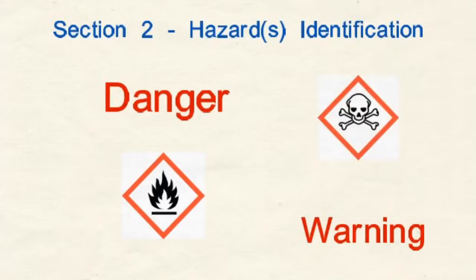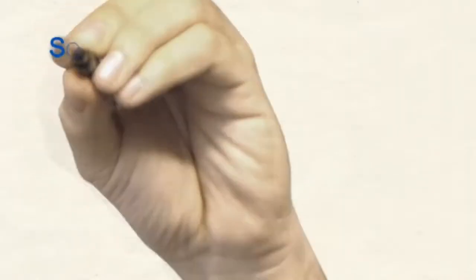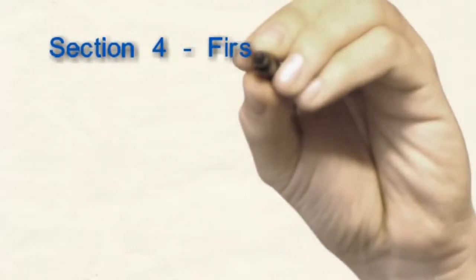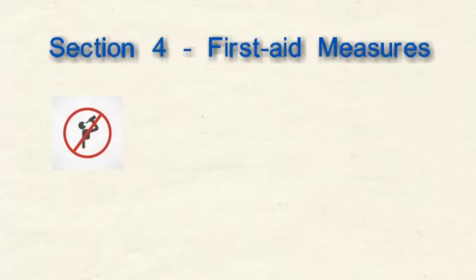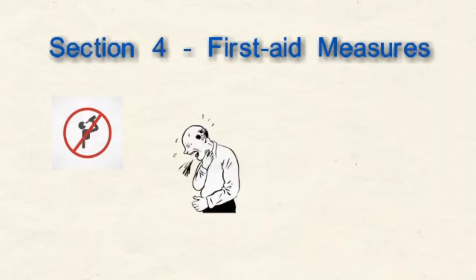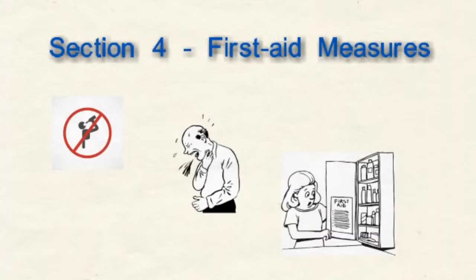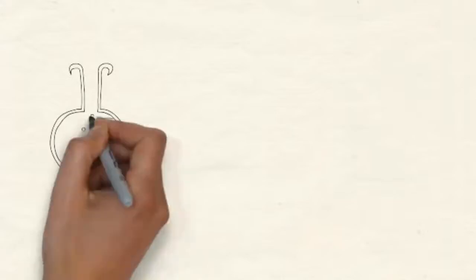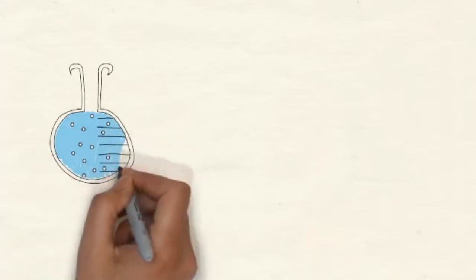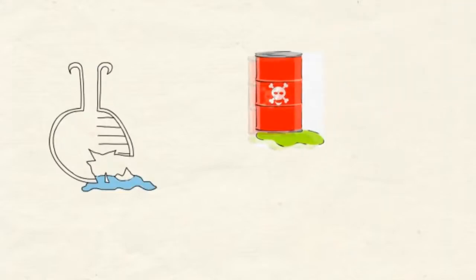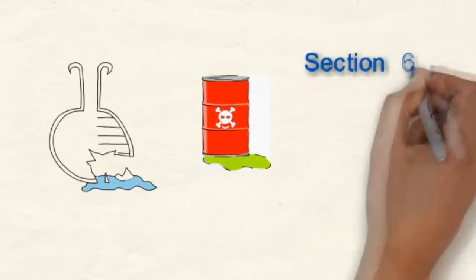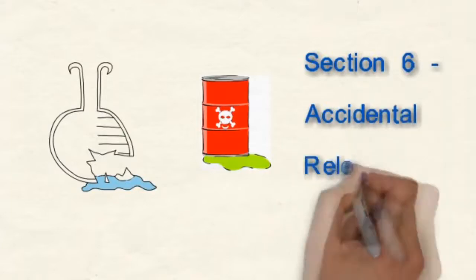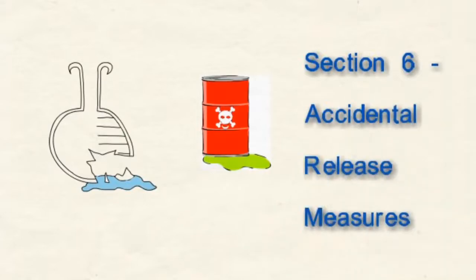Section 2, Hazards Identification, is required to include all hazards regarding the chemical. What do you do if the product gets in your eyes, on your skin? What if you inhale or swallow some? Section 4, First Aid Measures, lists the signs and symptoms of exposure to the chemicals, whether the effects are usually immediate or delayed, and the appropriate first aid measures to take. If the product is accidentally spilled or released from its container, how do we clean it up? What materials can we use, and how do we dispose of everything properly? Should we wear masks or gloves? Eye protection? All this should be listed under Section 6, Accidental Release Measures.